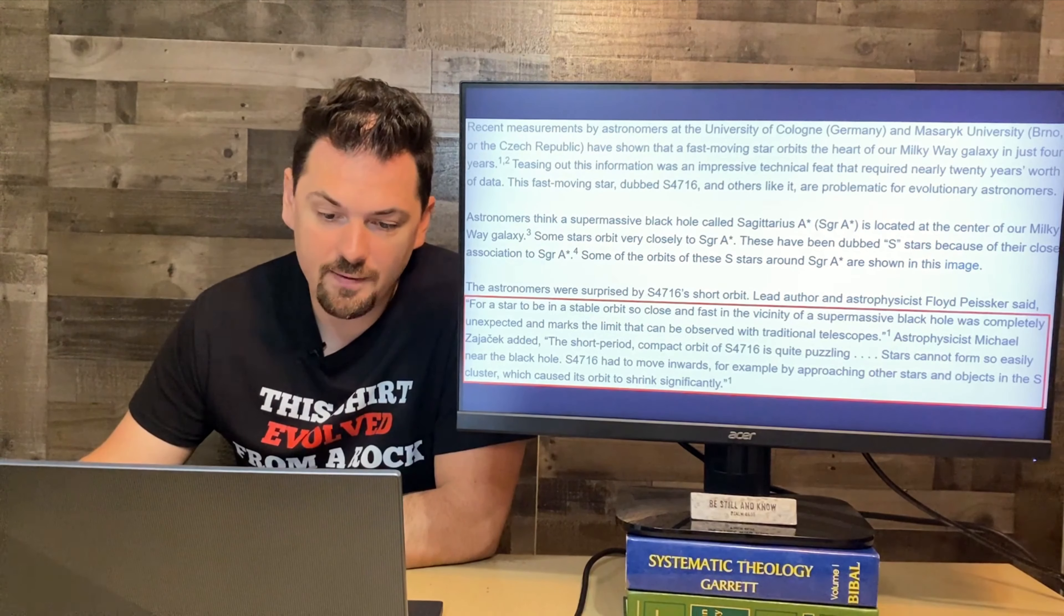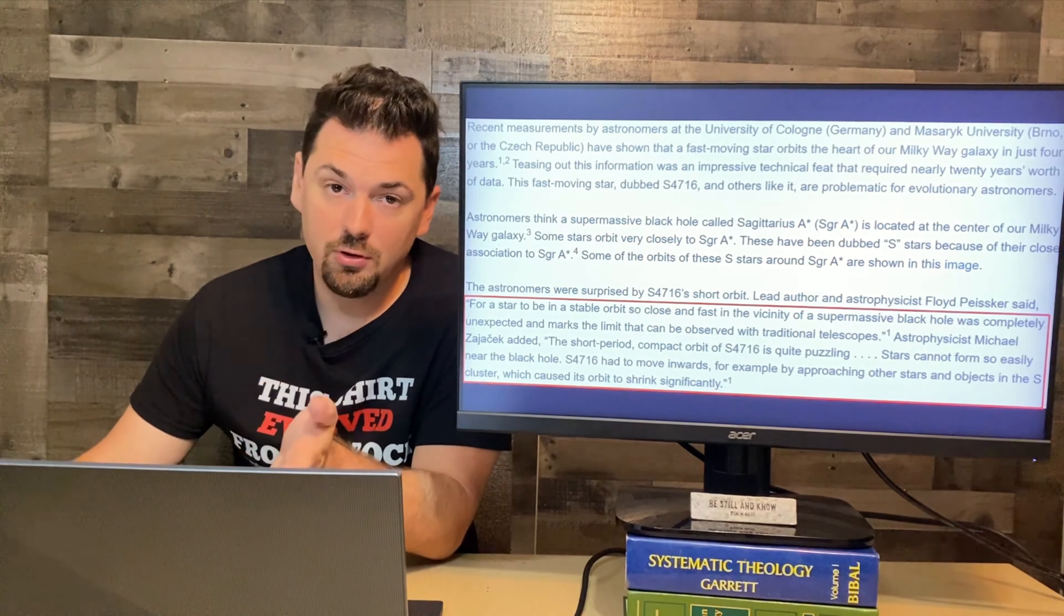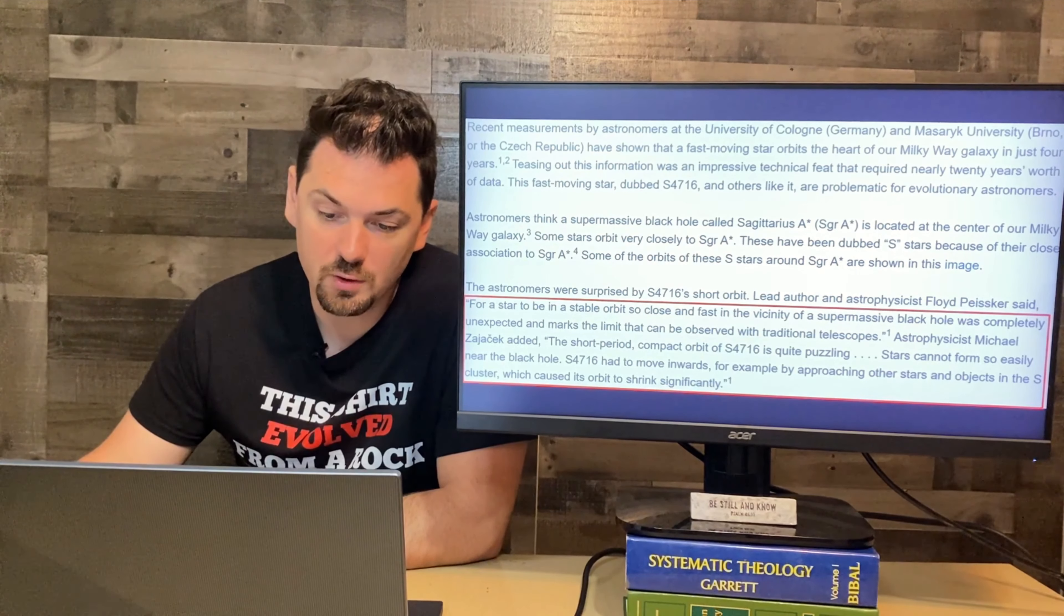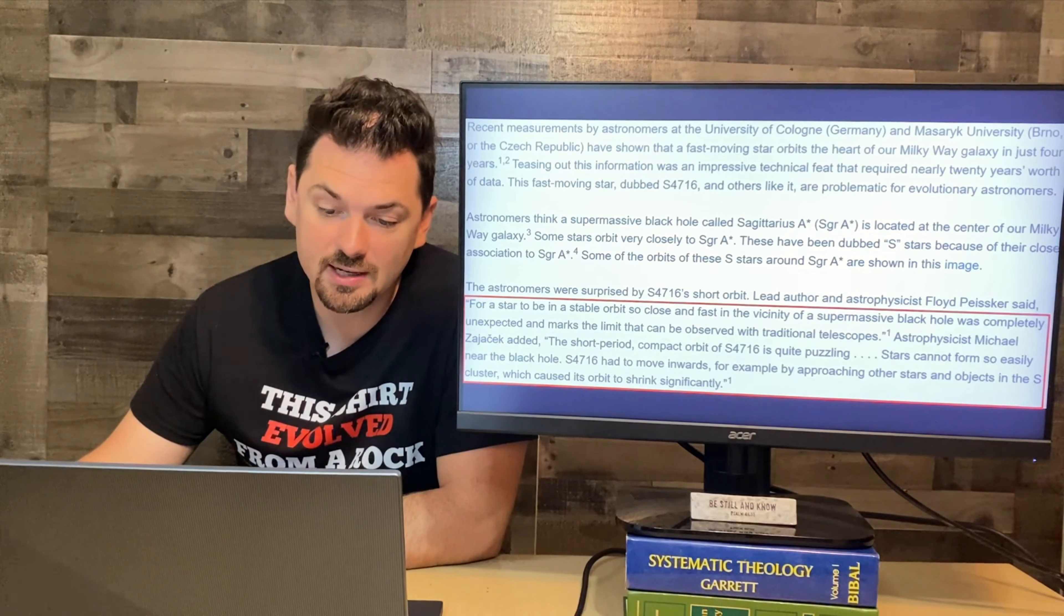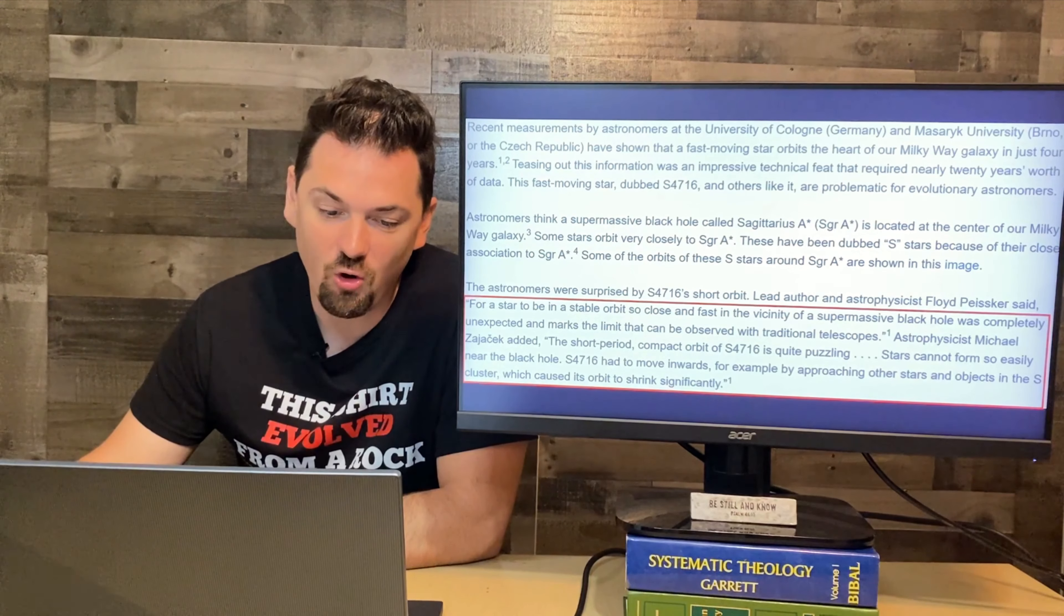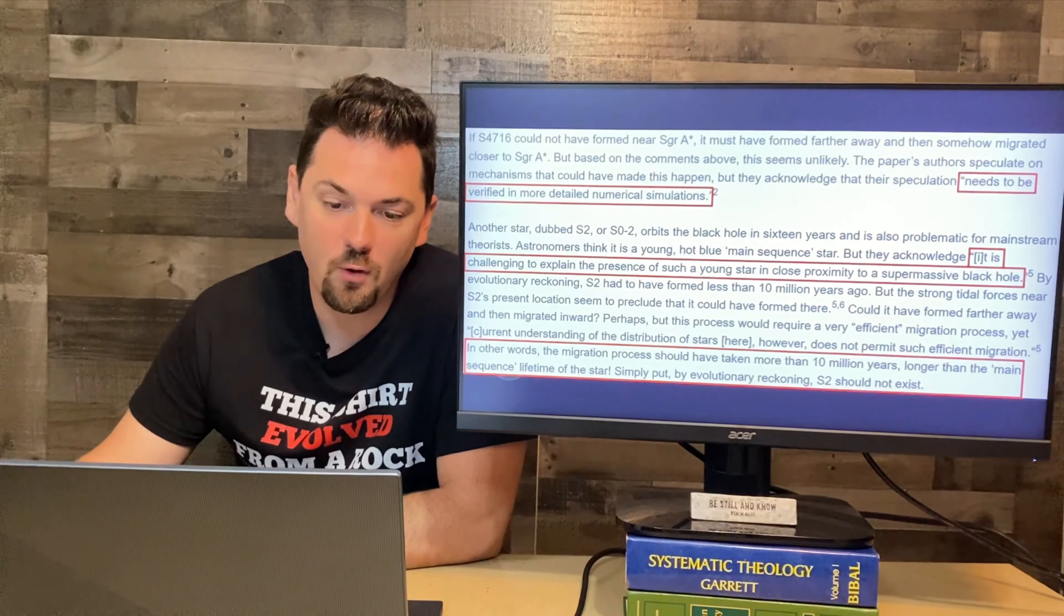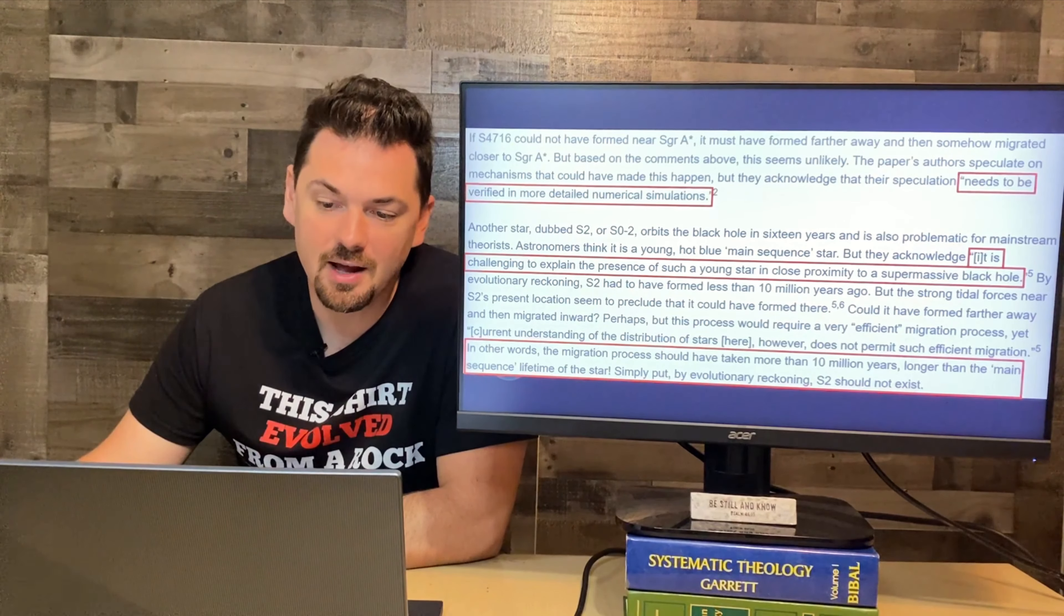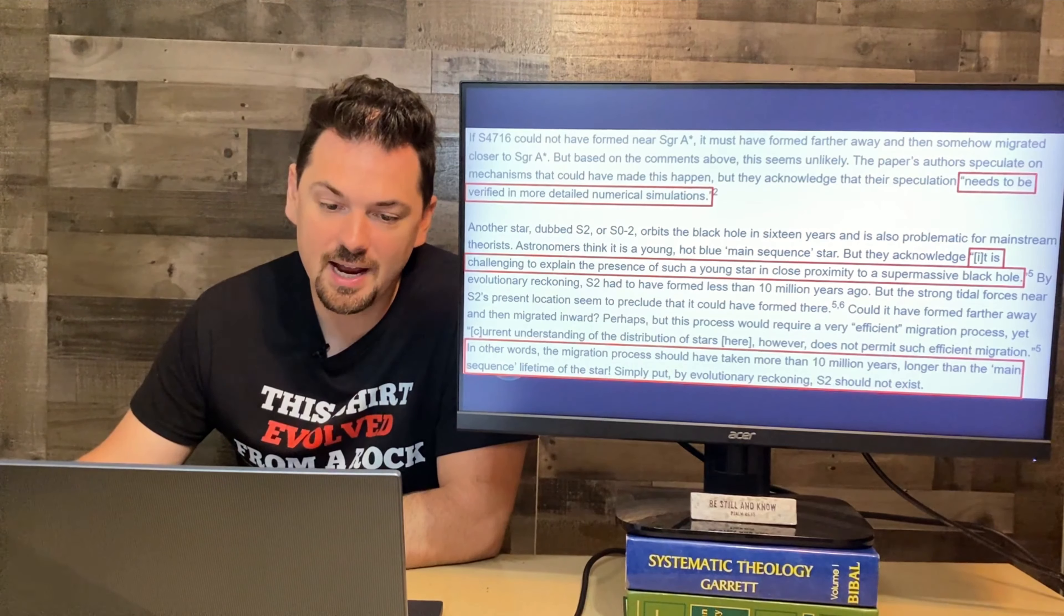The astronomers were surprised by S4716's short orbit. Lead author and astrophysicist Floyd Peißker said, for a star to be in a stable orbit so close and fast in the vicinity of a supermassive black hole was completely unexpected and marks the limit that can be observed with traditional telescopes. Astrophysicist Michael Zajaček added, the short-period compact orbit of S4716 is quite puzzling. Stars cannot form so easily near the black hole. S4716 had to move inwards, for example by approaching other stars and objects in the S-cluster, which caused its orbit to shrink significantly. If S4716 could have formed near Sgr A*, it must have formed farther away and then somehow migrated closer. But based on the comments above, this seems unlikely. The paper's authors speculate on mechanisms that could have made this happen, but they acknowledge that their speculation needs to be verified in more detailed numerical simulations.